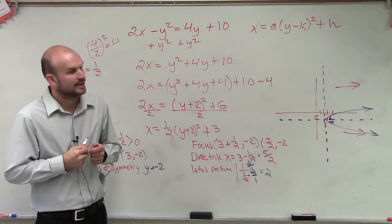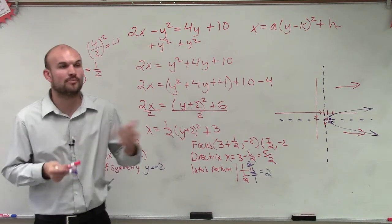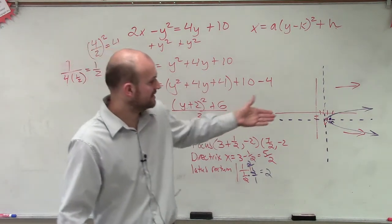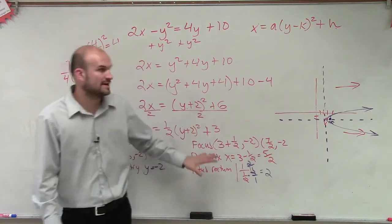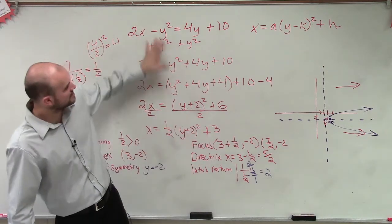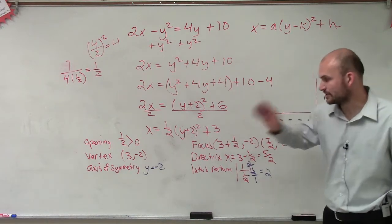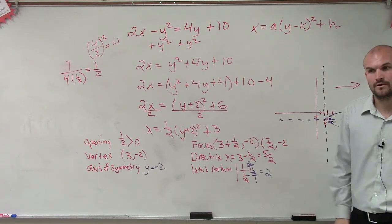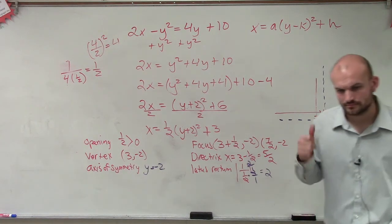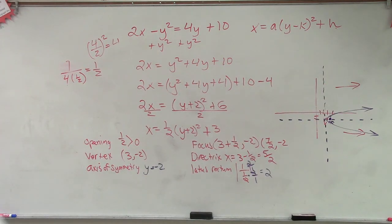So you guys can see — you started graphing those points, and now I can graph through those points to sketch my graph. And obviously, ladies and gentlemen, if we wanted to find more points to verify this, we could easily go ahead and create an xy table. But for right now, as far as putting it into vertex form and then finding the opening, vertex, axis of symmetry, focus, directrix, and latus rectum — and then you're done.